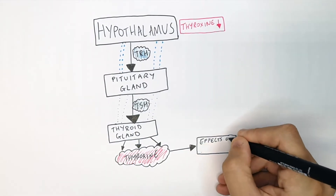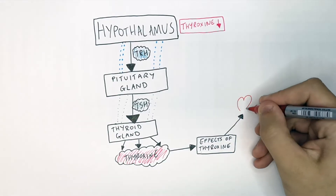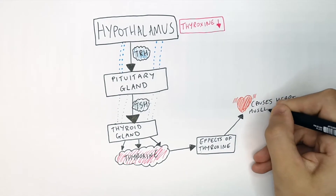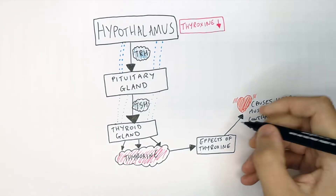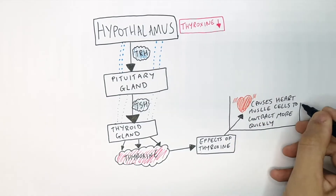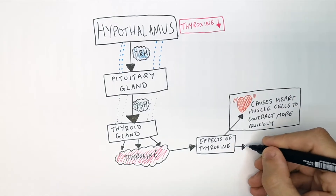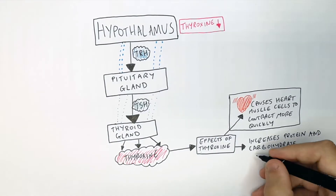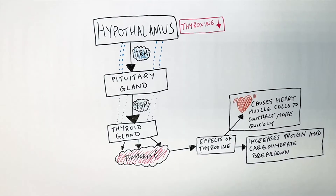The effects of thyroxin are as follows. Thyroxin goes to the heart and causes the heart muscle cells to contract faster, so too much thyroxin will increase heart rate and potentially blood pressure. It also increases protein and carbohydrate breakdown, thereby increasing your metabolism.